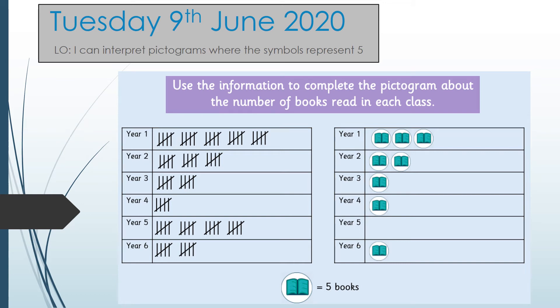Hello Year 2, it's Tuesday the 9th of June. We've got another day of pictograms but today we're focusing on pictograms where the symbols represent five each. Here we have a tally chart and a pictogram showing the number of books read in each class, and it's asking you to use the information in the tally to complete the pictogram.